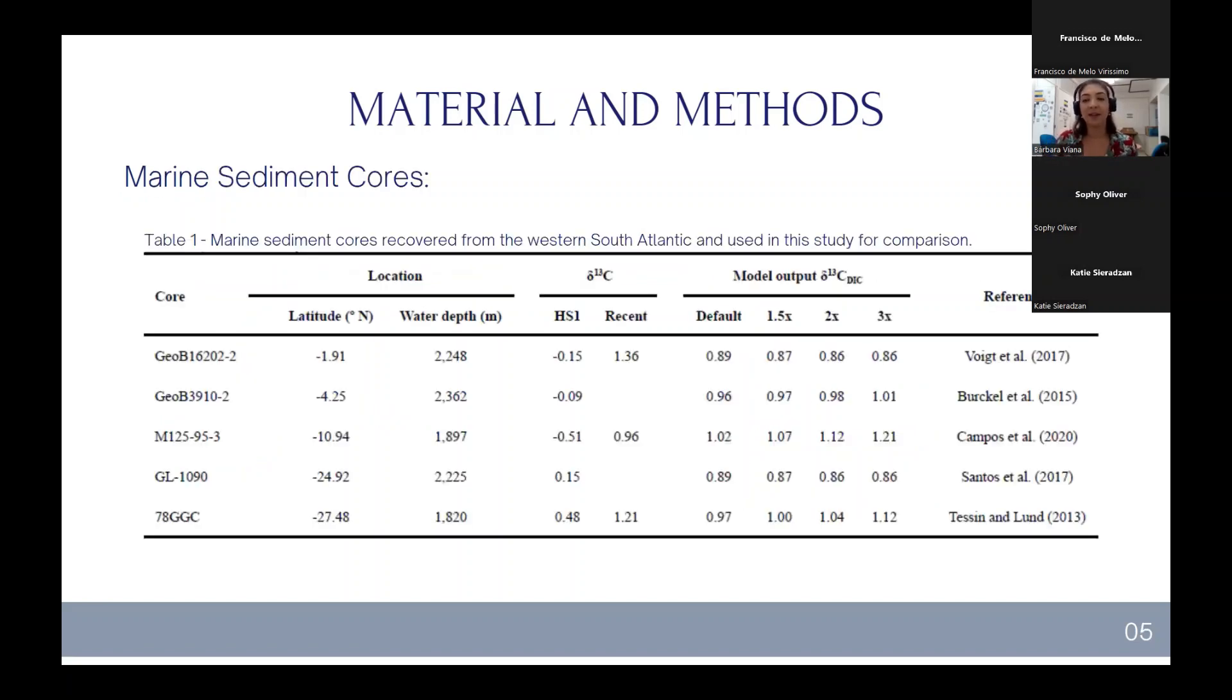Here we have the table where we can compare the model output with the carbon-13 signature. Here, the values recovered from the marine sediment cores, where we can see that during Heinrich stage 01, we had three of them presented negative anomalies. Well, our model output was far from what we expected, presenting positive values and way higher than what is observed on marine sediment cores.